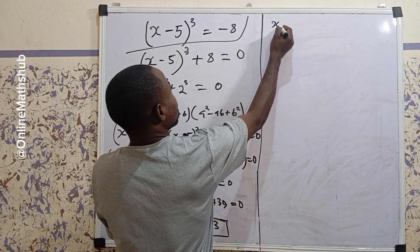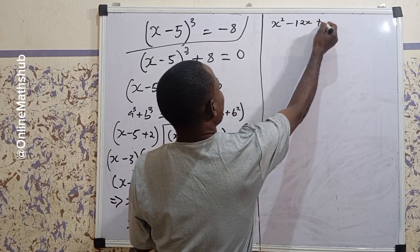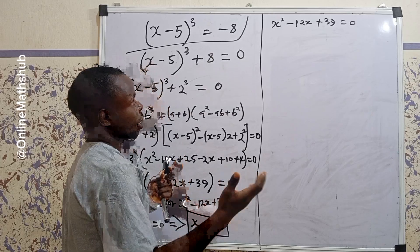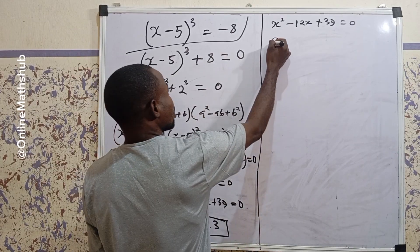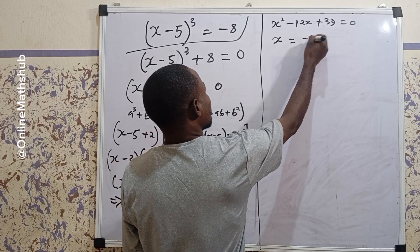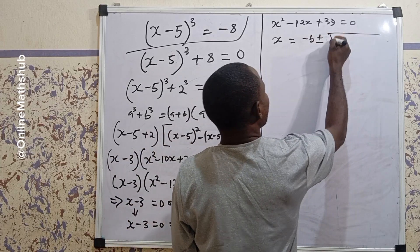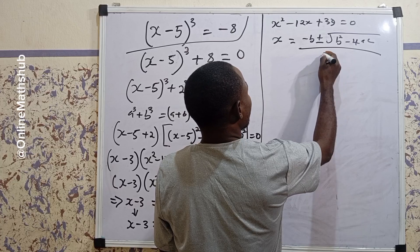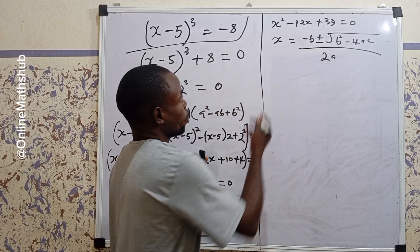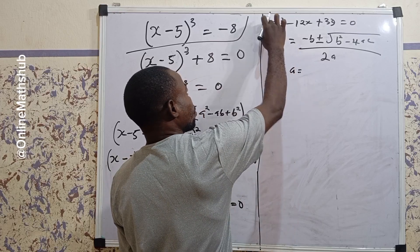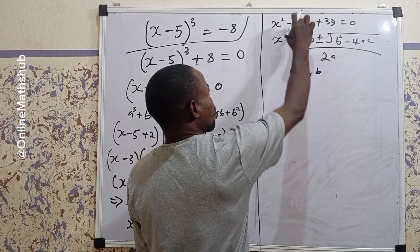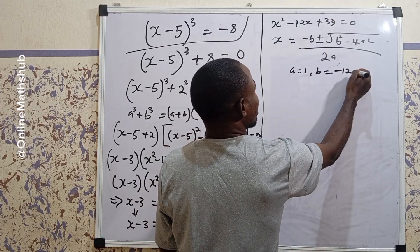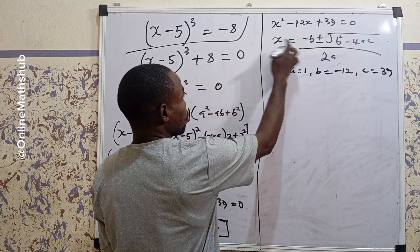The second case is x squared minus 12x plus 39 equals 0. I'll use the quadratic formula: x equals negative b plus or minus the square root of (b squared minus 4ac), all divided by 2a. Here a equals 1, b equals minus 12, and c equals 39.